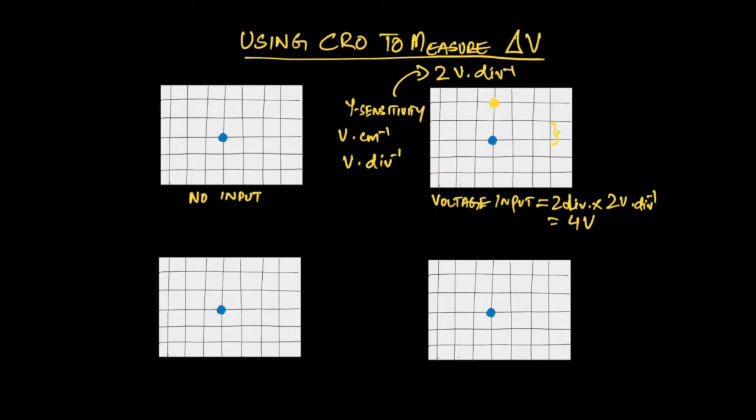The voltage input that we applied was two divisions times 2 volts per division, which is 4 volts. Let us take another example. Let us say for the sake of argument maybe the yellow dot doesn't move up quite so much, it goes all the way up until here. This is still a proportional change. You would still calculate the voltage input. In this case it's 1.5 divisions, so 1.5 times 2 volts per division gives us 3 volts.